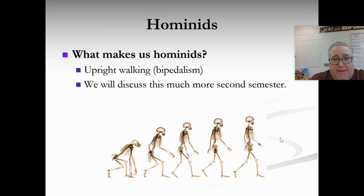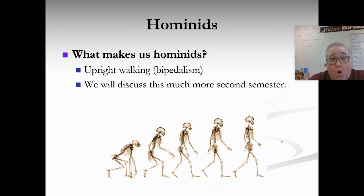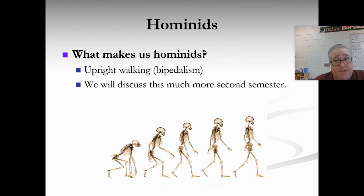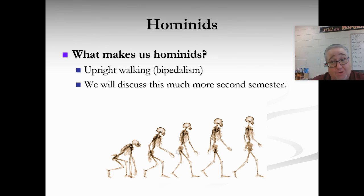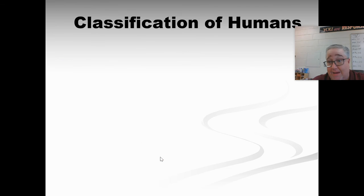Finally, hominids — the family we belong to. Hominids are primates that walk upright. We are the only bipedal primates, meaning we walk on two legs as our primary method of locomotion. A chimpanzee or gorilla can walk on two legs, but it's not their primary method — they are knuckle walkers. We are the only ones on the planet that walk upright as a primary method, which gives us very unique capabilities.